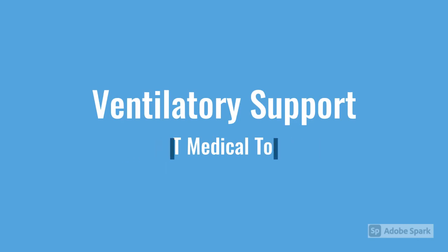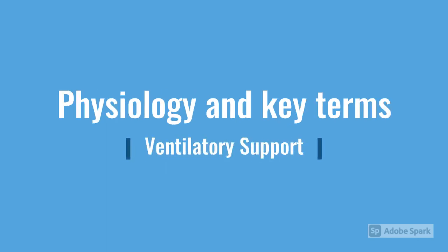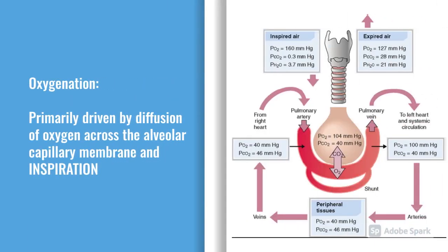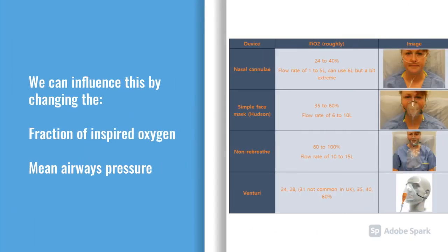We're going to talk about some physiology and key terms before we get into the nitty-gritty. Oxygenation is obviously important, and it's mainly driven by diffusion of oxygen across the alveolar capillary membrane. The key respiratory bit that drives oxygenation is inspiration. If you're worried about oxygenation, you want to increase that. There are two ways: you can either change the fraction of inspired oxygen, or you can increase the mean airways pressure.